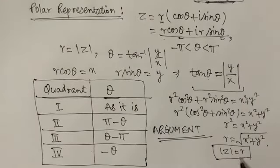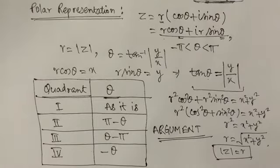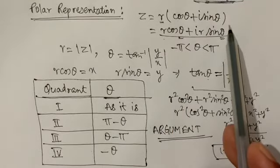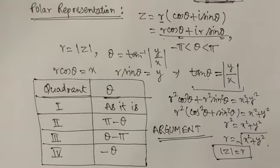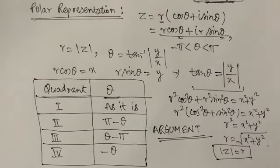Once we have both r and θ, we write z = r(cos θ + i sin θ). This is the polar representation. The Argand plane is where we represent any complex number, and polar form uses the modulus and argument. We have now covered both Argand plane and polar representation.